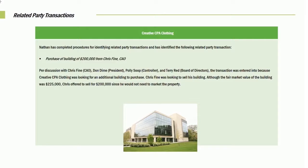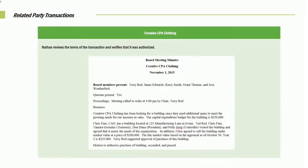We're going to review the terms of the transaction, and the very first place we go is to the Board meeting minutes. This shows that they had a quorum, a meeting was called, and Creative Clothing was looking for a building. It's noted that Chris Fine has a building located — they gave the address, discussed the price, and it was ultimately passed. So all of those items are there, and the related party transaction was properly approved.